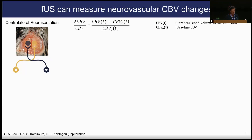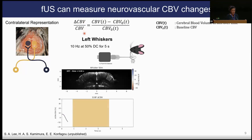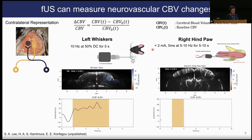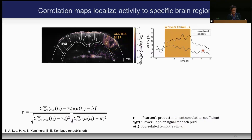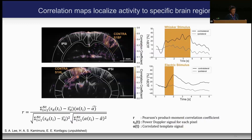We look at CBV changes after craniotomy, examining contralateral representations and relative CBV change. For left whiskers, we use a mechanical actuator and look at the contralateral motor cortex lining up in blue. For the right hindpaw, an electrical stimulator runs at a specific current and frequency — we again see the contralateral hemisphere responding, with the usual hemodynamic delay relative to the stimulus. We can make correlation maps with the stimulus and see where activity correlates — contralateral somatosensory for the whisker, and also contralateral somatosensory for the electrical paw stimulus.